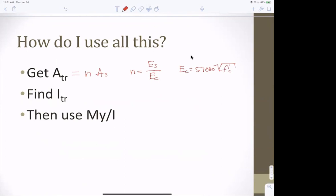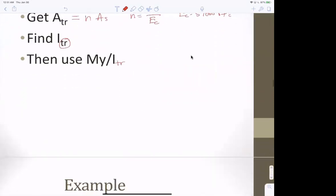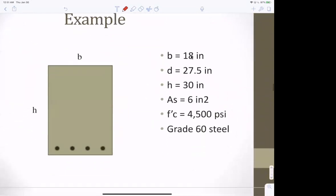Okay. So, how do you use all this? You get the A transform, which is N times the area of steel. And N is E steel over E concrete. And remember, E concrete is 57,000 square root f'c PSI. Then you get a moment of inertia transformed. And then you can use the MY over I transform.